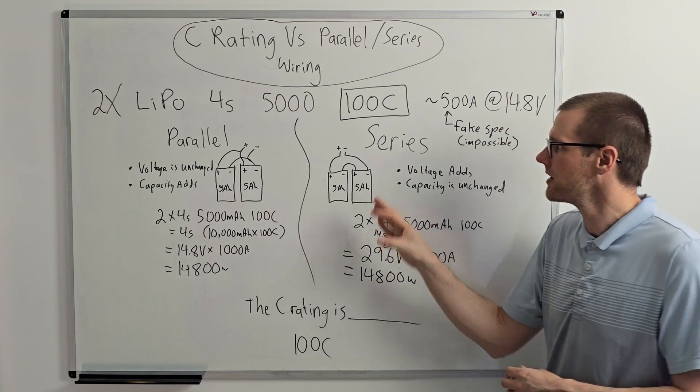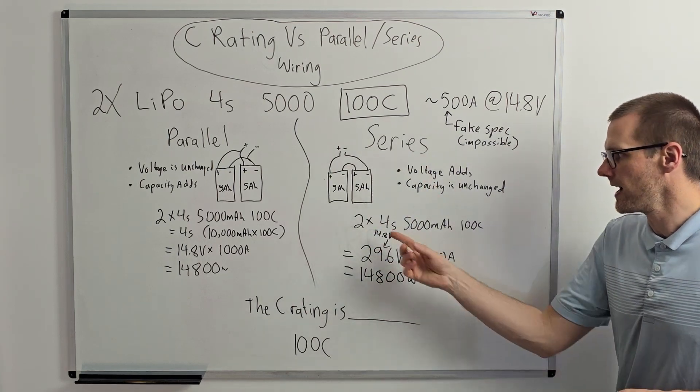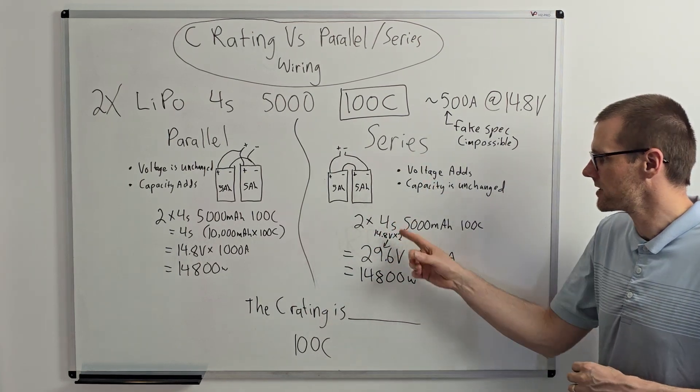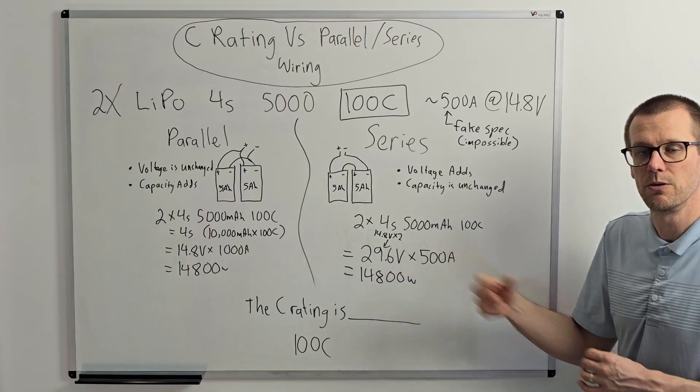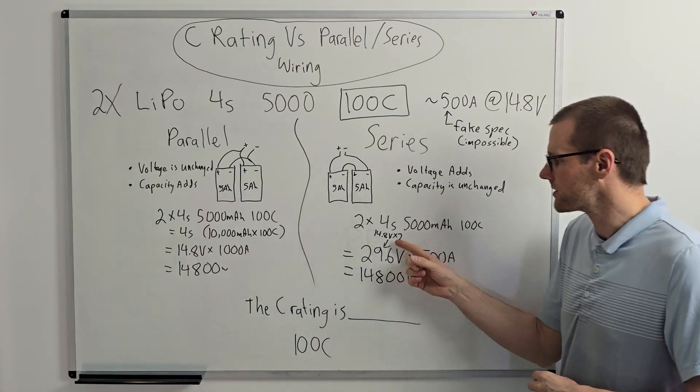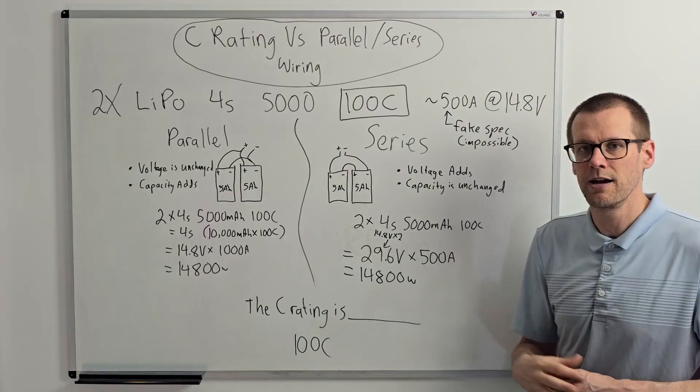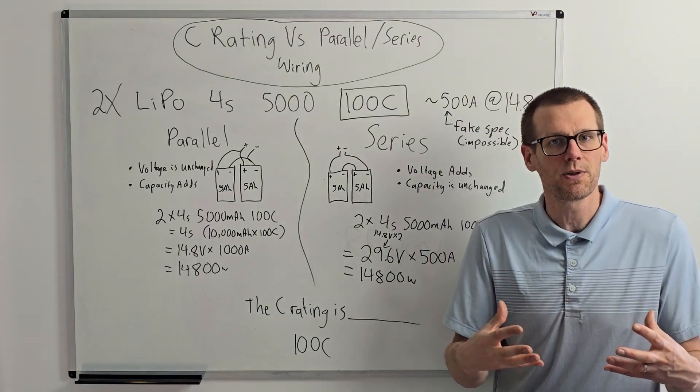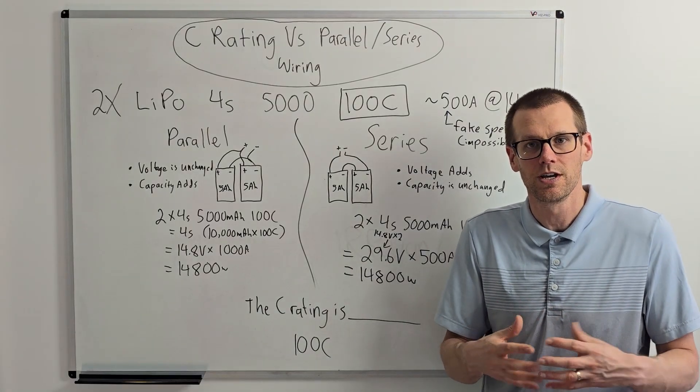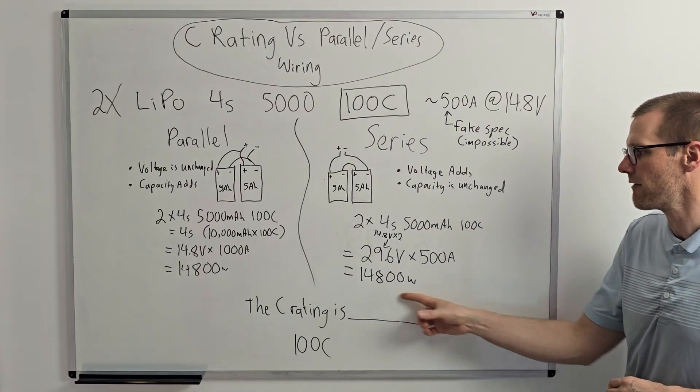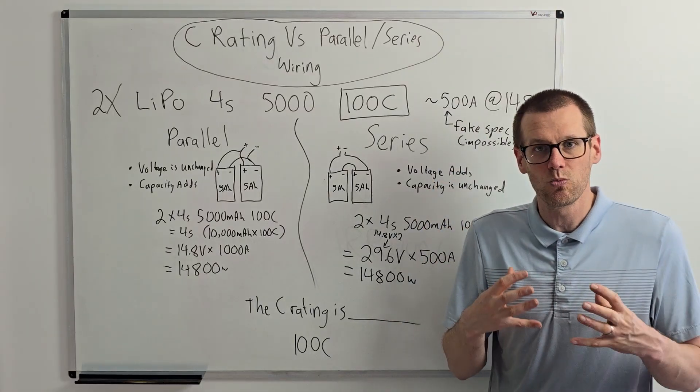Now let's take a look at the numbers here on our series configuration. And we get the voltage now adding. So we take our 4S, which is 14.8 volts nominally. We multiply that by two and we get 29.6 volts. We multiply that by the same continuous current that we had before, which is up here at 500.